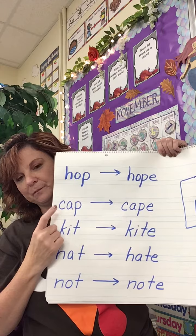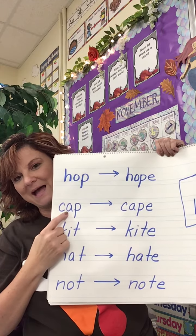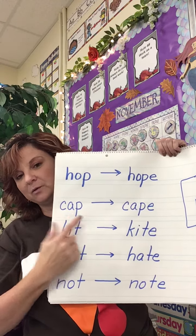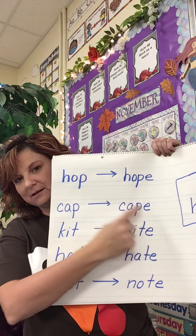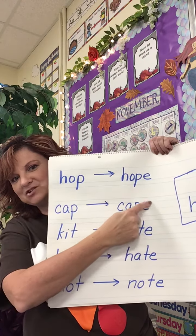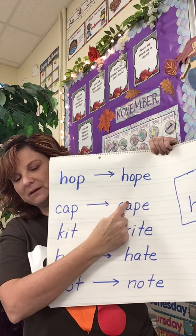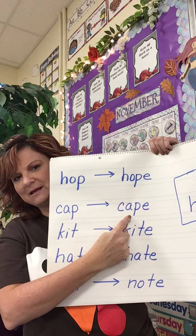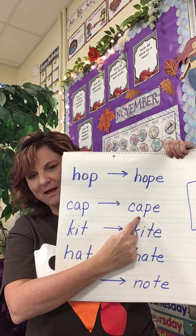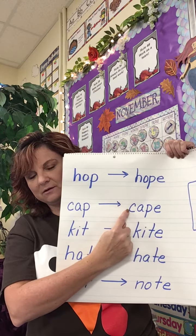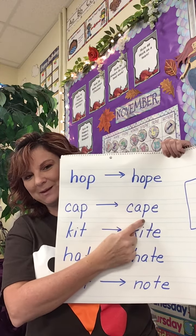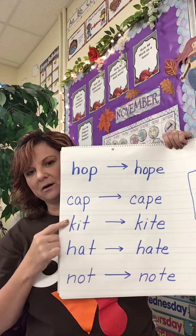What's this word? We have C-A-P, cap. We add that sneaky E, or tricky E, or silent E — it jumps over the P and tells the A to say the long sound, 'A', instead of the short 'a'. So now we have C-A-P-E, cape.